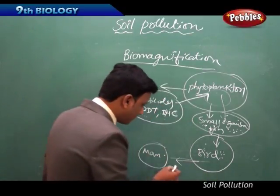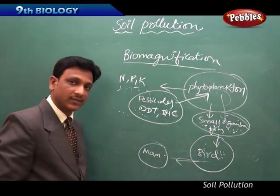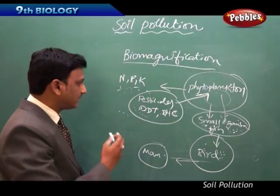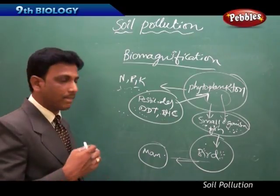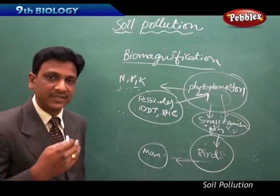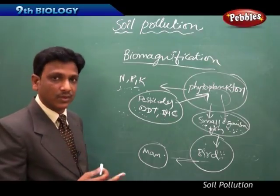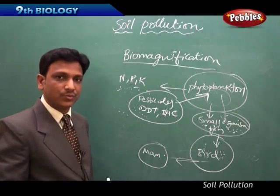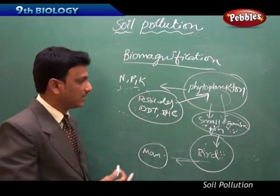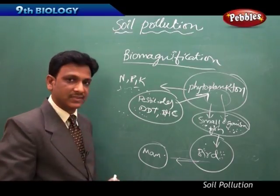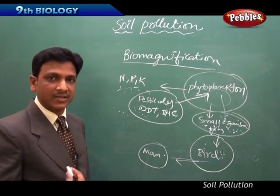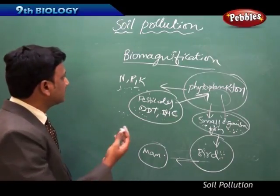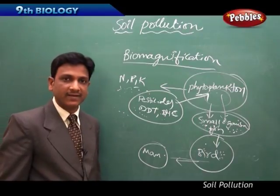If the bird is eaten by man, the pesticides are transferred to man. In this way, we can see how the negligible values of pesticides and insecticides present in water are magnified to large volumes and get accumulated in the systems of higher animals like man and other tertiary consumers. This is called biomagnification.